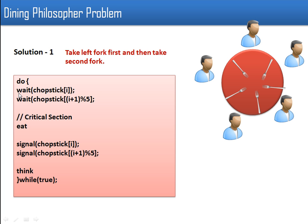Every philosopher, whenever he wants to eat, will lock its left fork. The wait function decreases the value of the semaphore — initially if this value is one, the wait function will make it zero. Then the philosopher tries to lock its right fork. So first they go for left, then they go for right. Once both chopsticks are occupied the philosopher will eat, and once eating is done they release the chopstick — they put their forks down on the table.